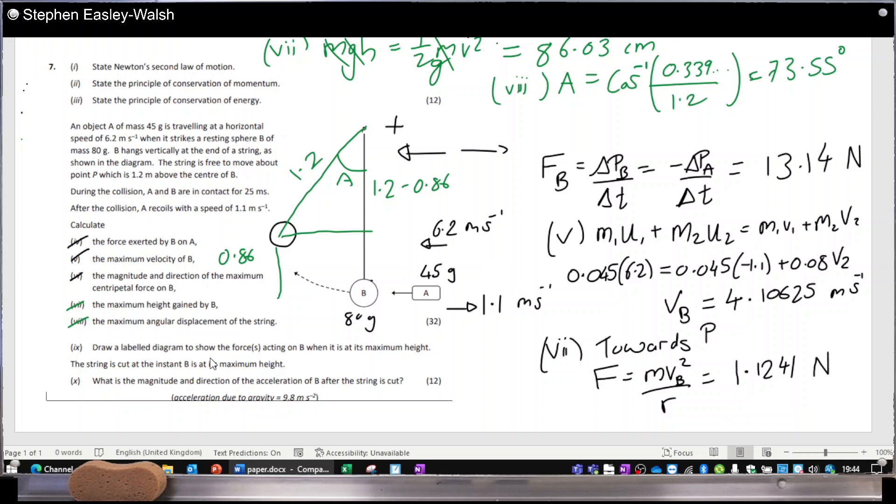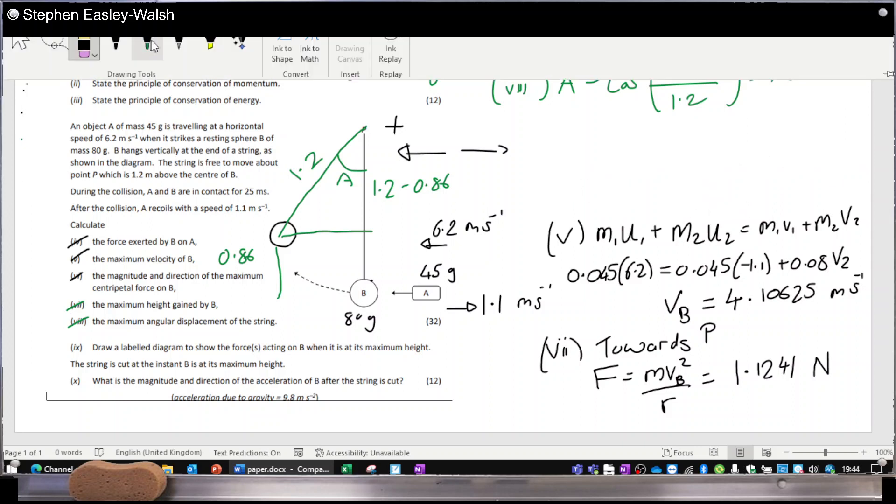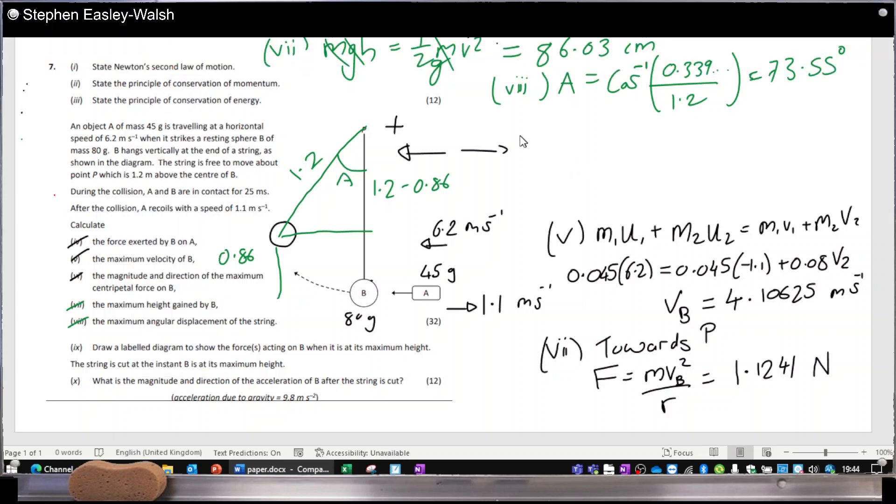Draw a labeled diagram to show the forces. Okey dokey. The labeled diagram now of the forces acting on B when it's at its maximum height. Okay, so there's B. There is a tension in the string, and then there's a weight. Yeah, that's it. That's basically it. I mean, I could label it more - weight, tension, the string, mass B - but what else is there? I think that's it.